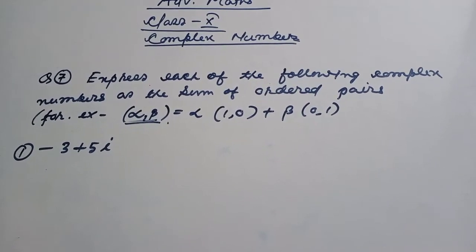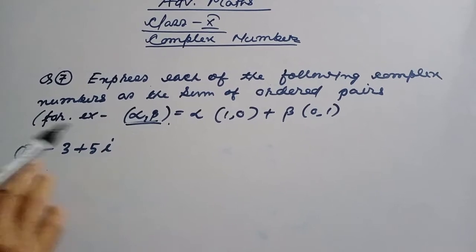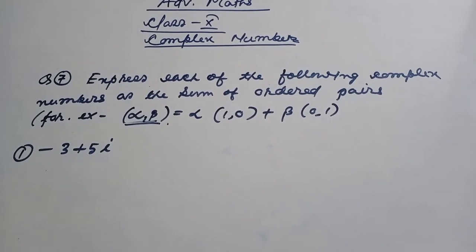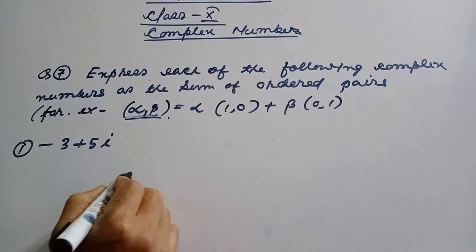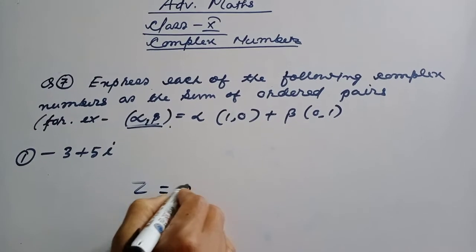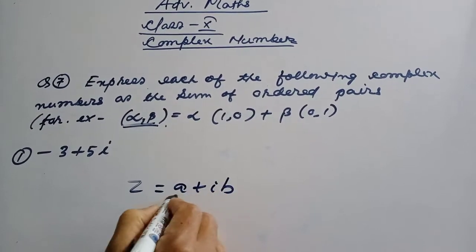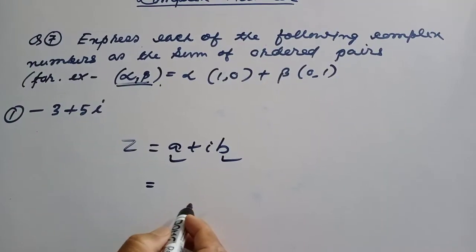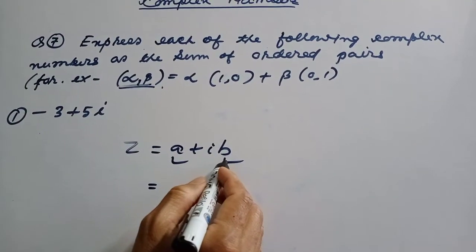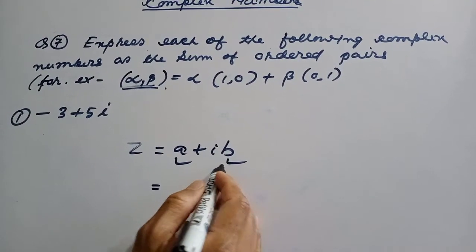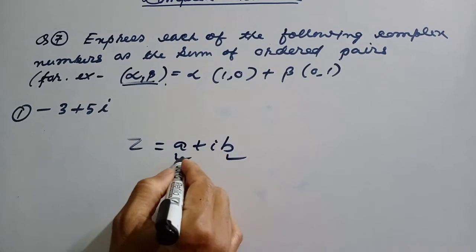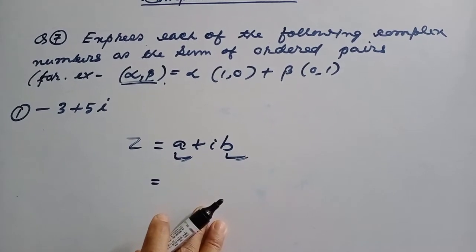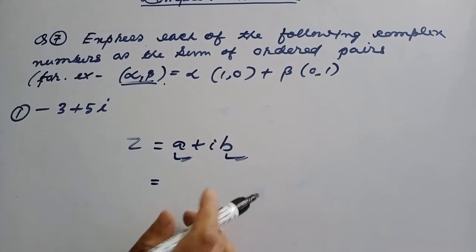Article 2, section 2.1: on the post-route, the complex number J is equal to A plus iB, that is, a real part and an imaginary part.